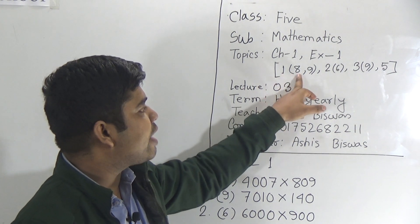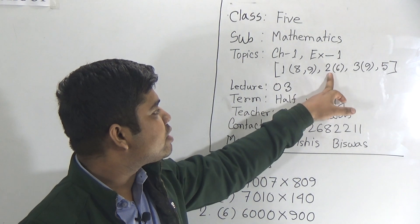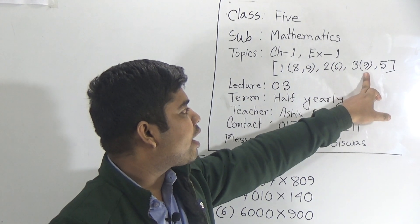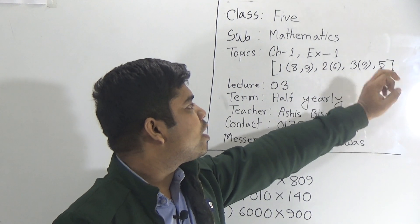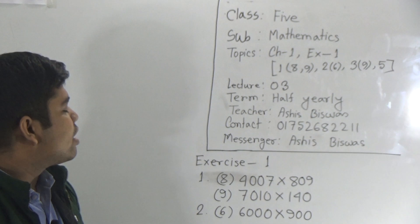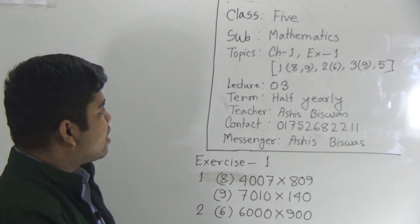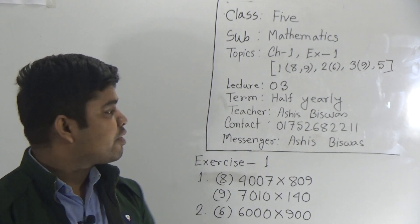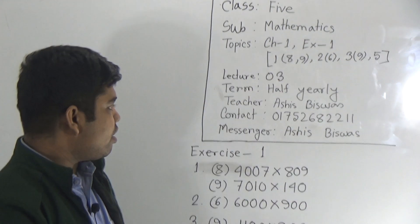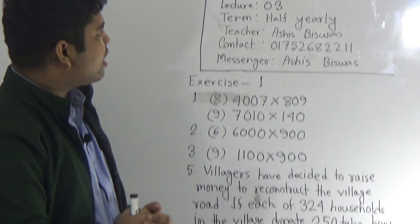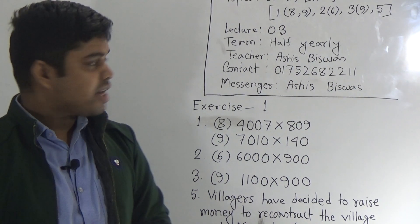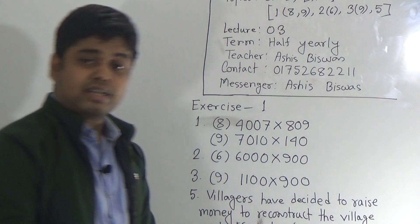From question 1 we shall solve numbers 8 and 9. From question 2 we shall solve number 6. From question 3 we shall solve number 9, and question number 5 (the word problem) will also be solved. Two classes have been held before, so this is lecture number 3 for the half-yearly exam. Let us start our class.